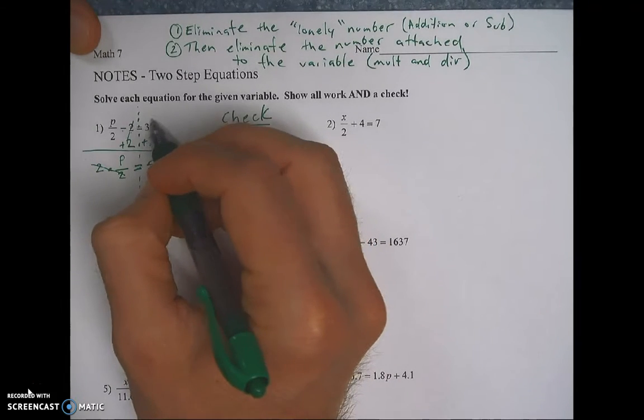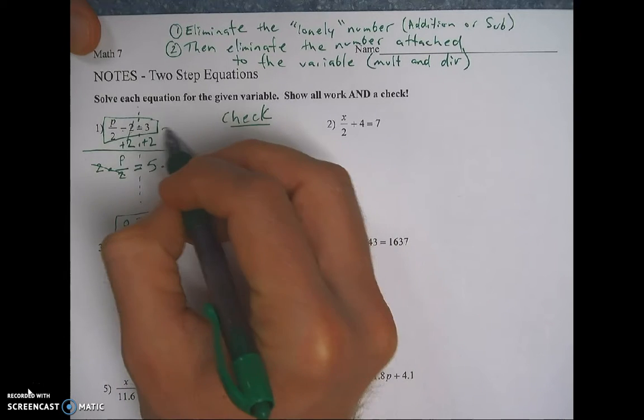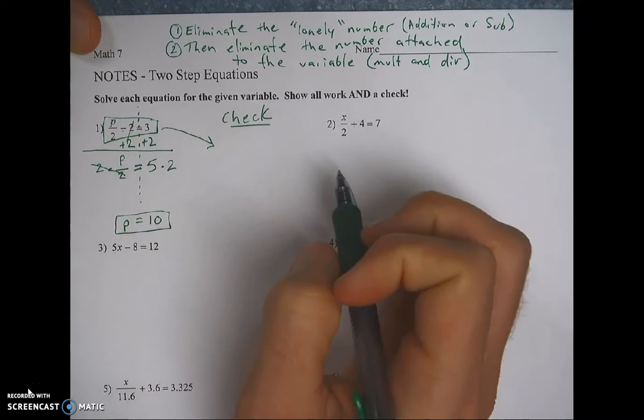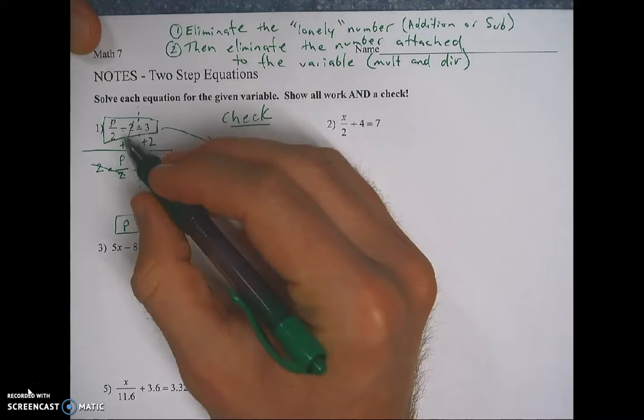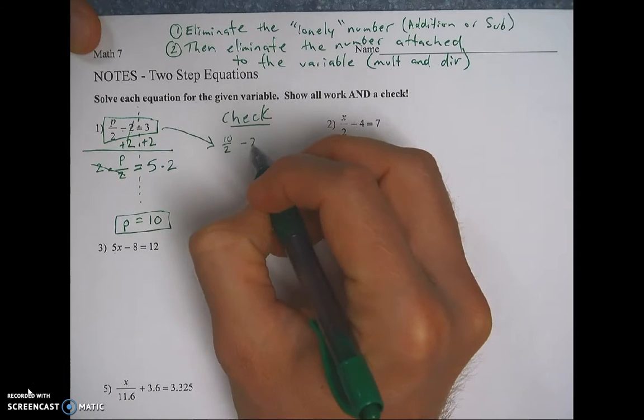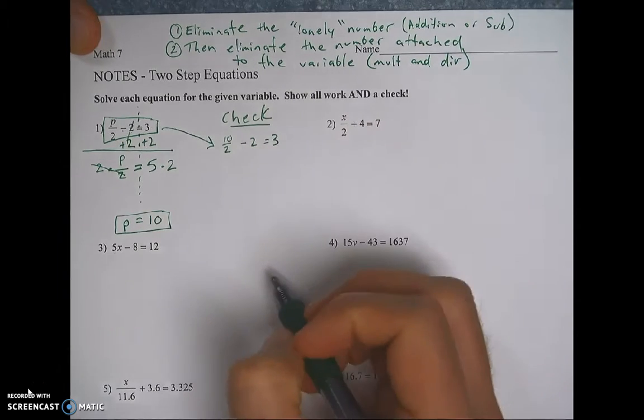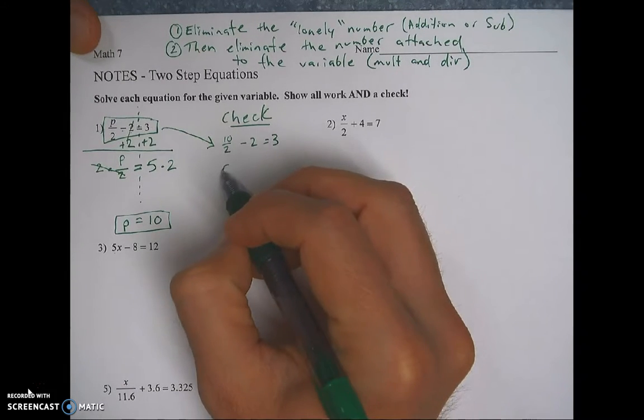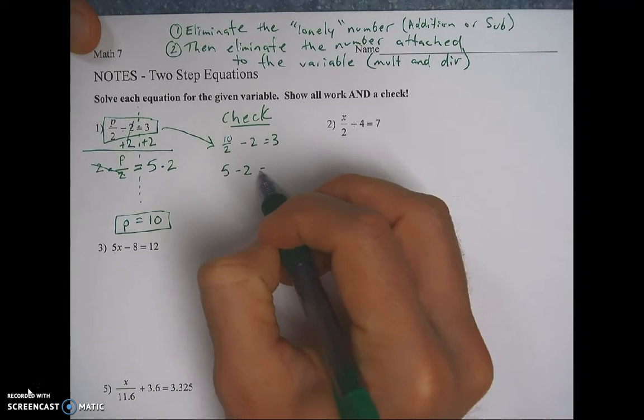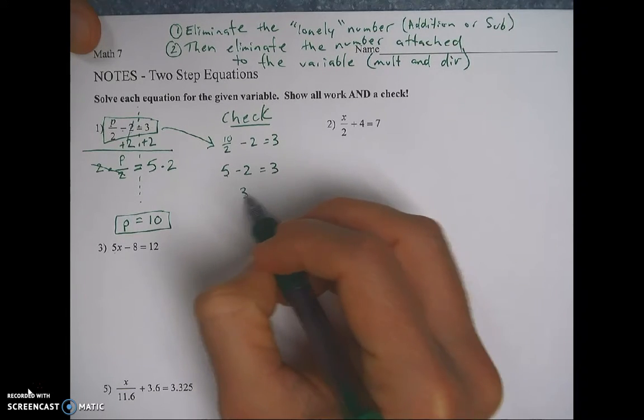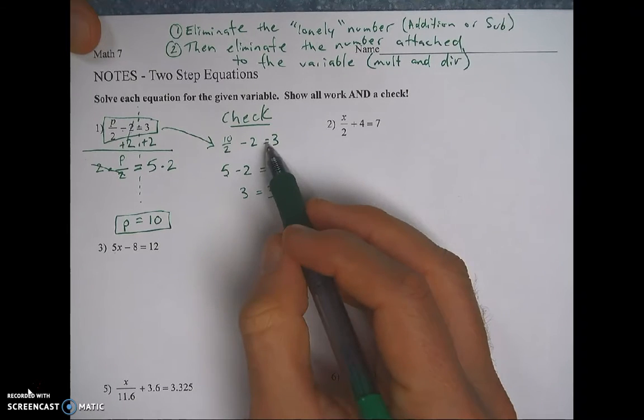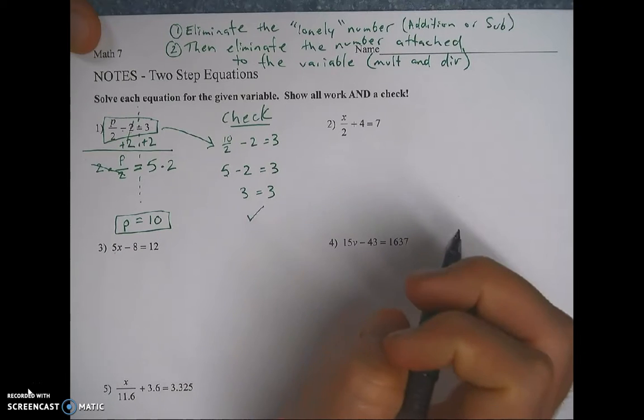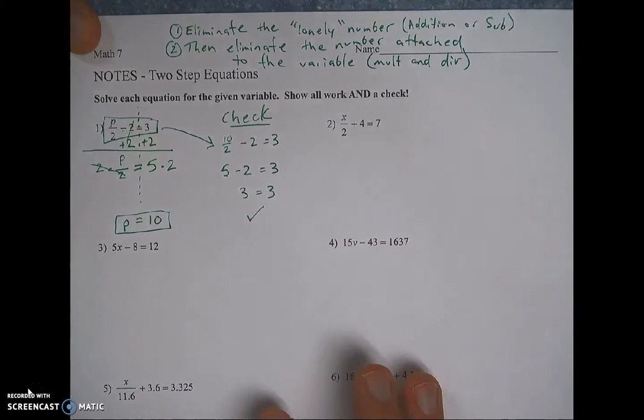So again, your check. You're going to take the original equation, and you're going to rewrite it, except for the variable becomes your answer. And we're going to see if it works. So instead of p over 2, I'm going to put 10 over 2. And then you're going to solve this just one step at a time. So you kind of follow your order of operations over here. 10 divided by 2 is 5. And then 5 minus 2 is 3. So the answer to the left side of my equation is 3. And then the right side is also 3, which means my answer is right. My check works, so my answer is right.